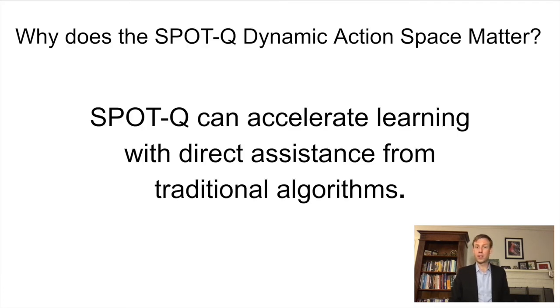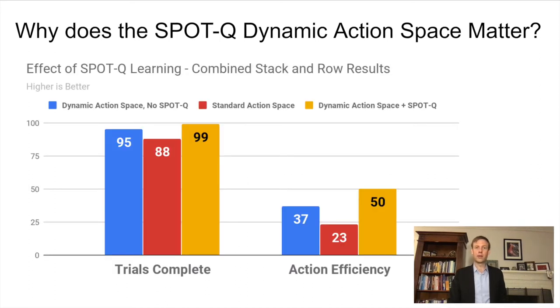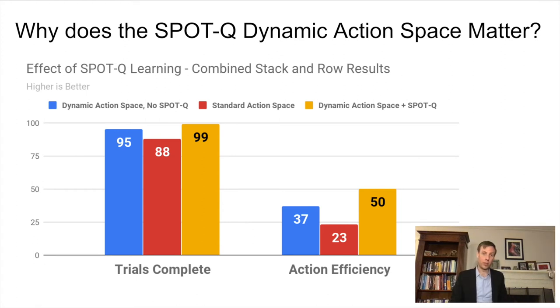So why does this matter? Well, SPOT Q can accelerate learning with direct assistance from traditional algorithms. Now let's look at some comparison data in simulation averaged across the stacking and row tasks. We compare a dynamic action space with no SPOT Q, a standard action space, and a dynamic action space with SPOT Q. The 95 and 88 percent of trials are completed for the ablation cases, and with our algorithm, the number of trials complete jumps all the way to 99 percent. Our action efficiency jumps from 23 to 37, and then all the way up to 50 percent efficiency with our model. These are really nice results for just 20,000 actions. We should point out that the best sim models complete every single trial, and those are the models we transfer directly to the real robot.